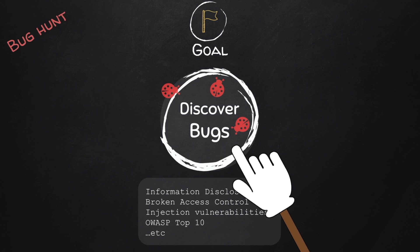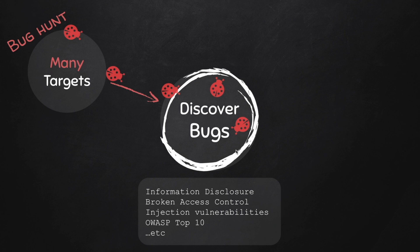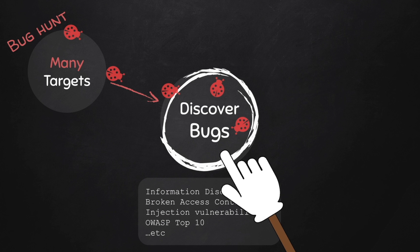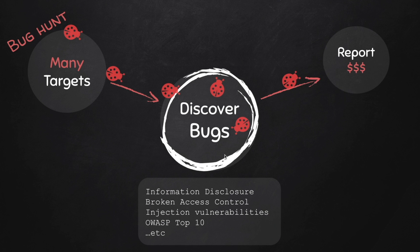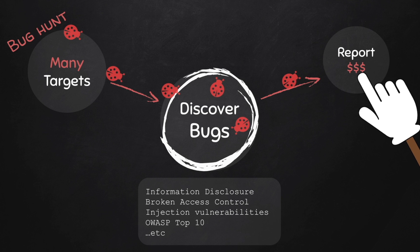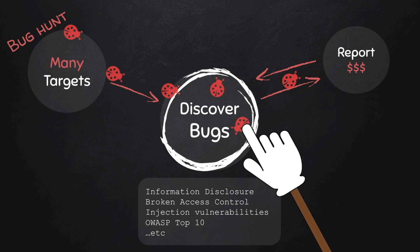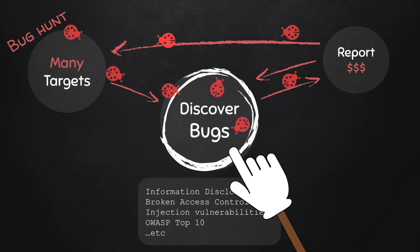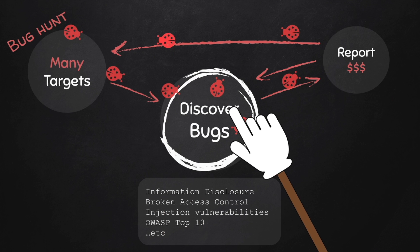Once you master the skills, the rest is very easy. You're going to find a target that has a valid bug bounty program so you can discover bugs in it legally. Once you discover a bug, you report it. If the report is valid, you get a reward. And once you have your reward, you go ahead and discover more bugs in the same target, or find another target and repeat.